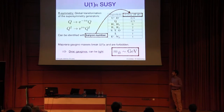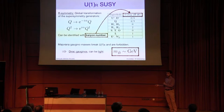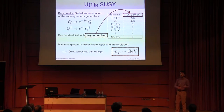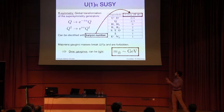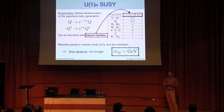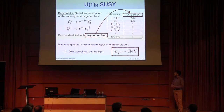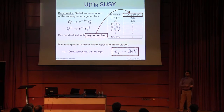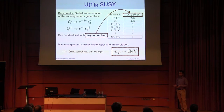Very briefly, to set the framework: the supersymmetric model we're dealing with is an R-symmetric model, meaning there's a global symmetry under which the supersymmetry generators transform, and therefore also the superfields. The charge assignments can be made so that this U(1) R-symmetry can be identified with baryon number, which is important. Because of the R-symmetry, Majorana gaugino masses are forbidden, so the fermionic superpartners of the gauge bosons have to be Dirac, making it easier to make them light — and this is important because the main phenomenology will be driven by having a light bino at the GeV scale.